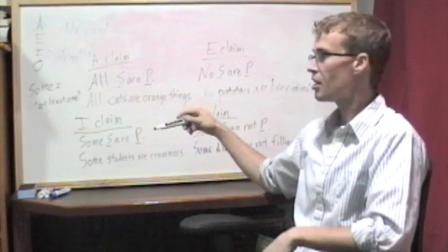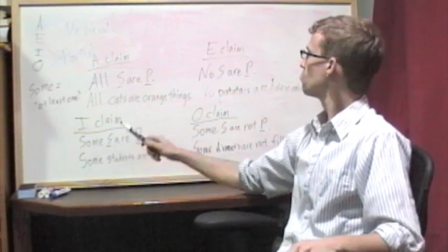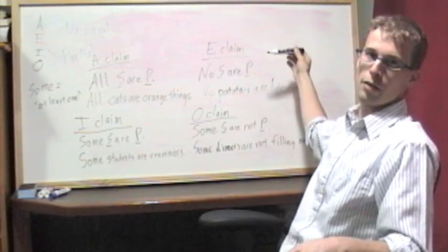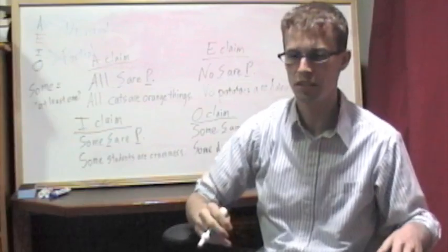It's not implied by this. But, we do know that if some students are crammers, that the corresponding E claim, no students are crammers, is false. So, there are certain implications that we know based on this.